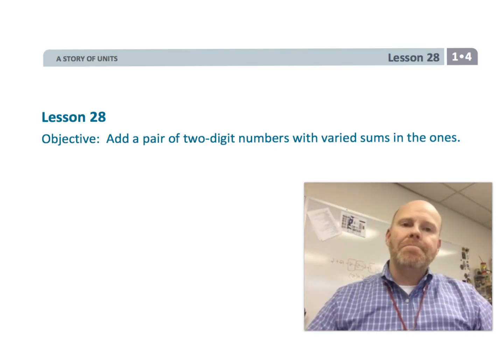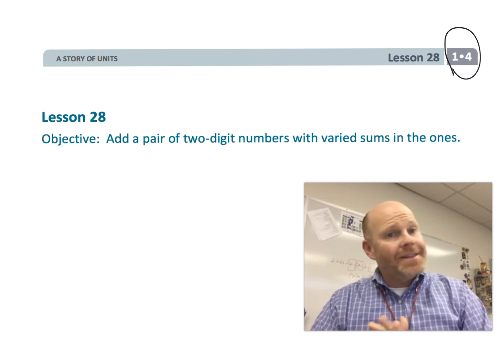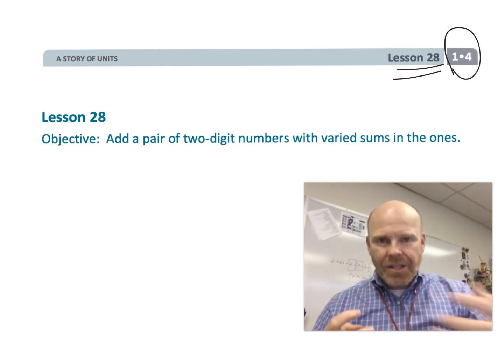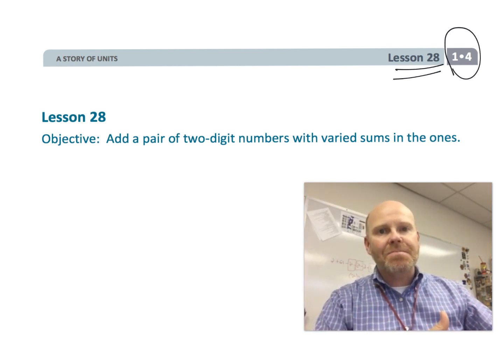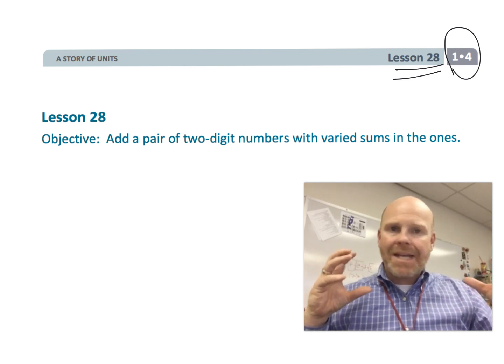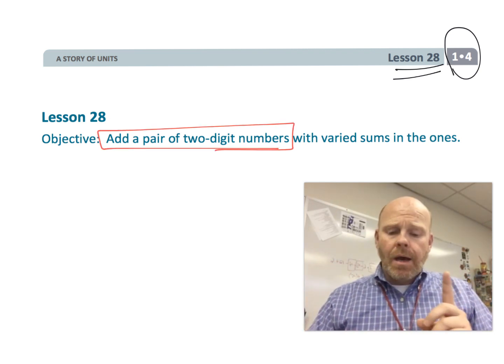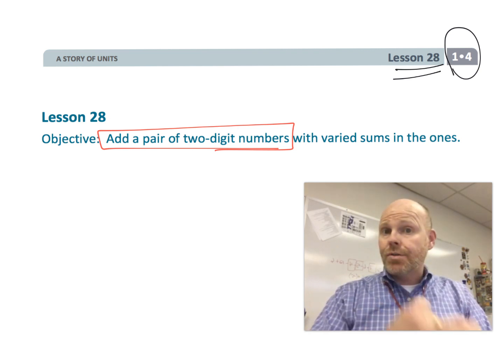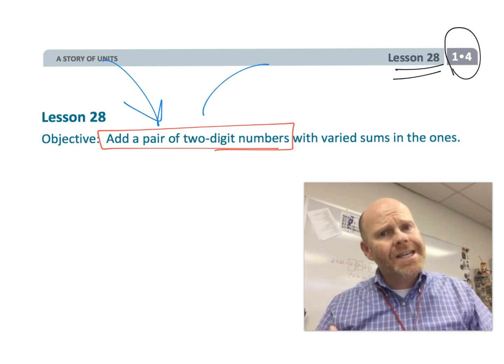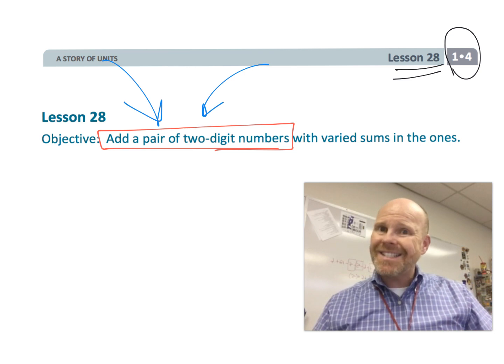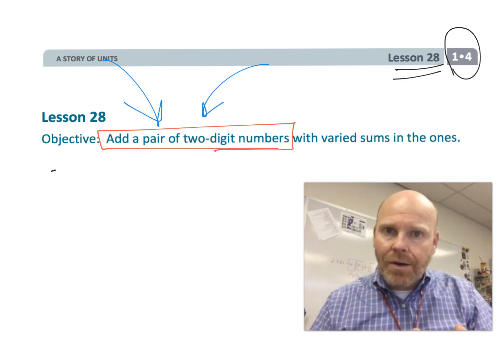This is first grade module 4 lesson 28. In this lesson we're going to continue and write out the rest of this module, basically practicing what our students have already known - adding a pair of two-digit numbers. We're still using methods other than the standard algorithm. That standard algorithm is actually going to happen in module 6.